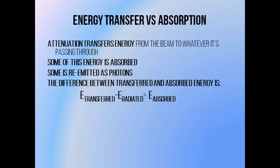Attenuation calculations can tell us what proportion of photons are going to interact inside a tumour, but attenuation only tells us about the number of photons that interact — not the energy deposition. Photons are a form of indirectly ionising radiation. They cause tissue damage by interacting and transferring energy to secondary electrons, which then go on to cause the majority of the ionisation and damage inside the patient. The amount of energy a photon loses during an interaction and passes to a secondary electron is the amount of energy transferred to the medium.